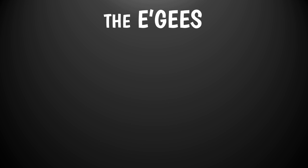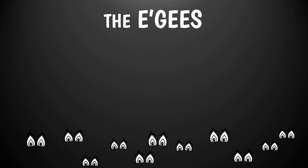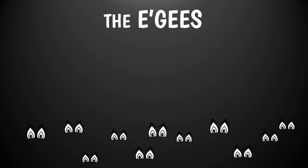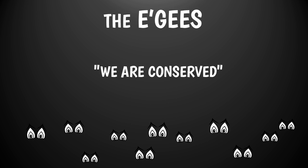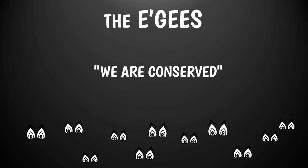Meet the E.G.s, a cartoon family that has been created for one purpose only: to help you make sense of energy. The family has a saying: we are conserved. Indeed, the total amount of energy in the universe always stays the same. When one member of the family becomes bigger, another one must become smaller. Energy cannot be created or destroyed — it can only be transformed between one form, one member of the family, and another.